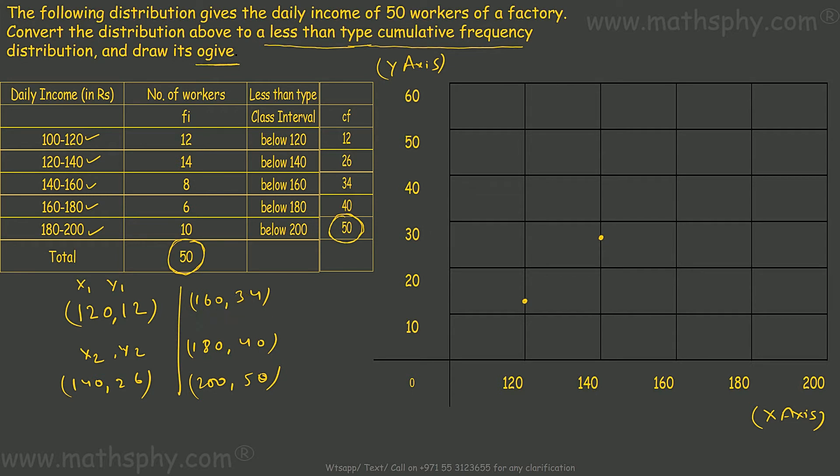Third is 160, 34. 160 is this, 34. Slightly below halfway between 30 and 40. Fourth, 180, 40. So, 180, 40 is this.